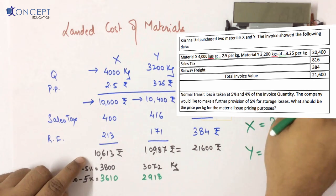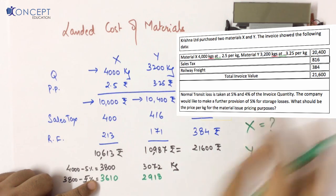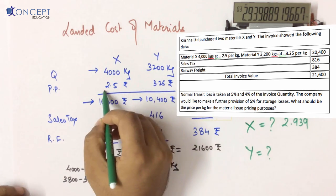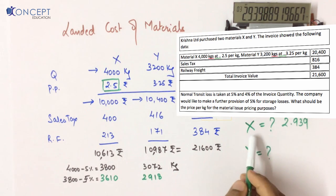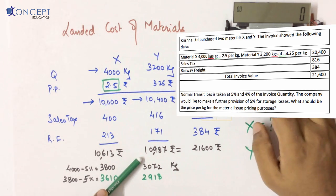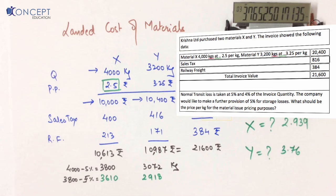Now we can find the landed cost per unit. For X: total cost 10,613 divided by usable units 3,610 equals 2.94 rupees per kg. We originally purchased at 2.5 per kg, but after all expenses and losses, the landed cost becomes 2.94. For Y: 10,987 divided by 2,918.4 equals 3.76 rupees per kg, compared to the purchase price of 3.25. This is called the landed cost of materials.